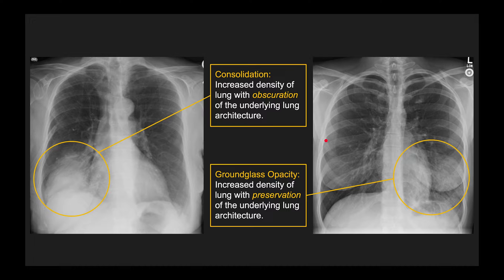Ground glass opacity is a bit different — it's an area of increased density of lung but it's not so dense that it obscures the underlying vessels. This is an area of ground glass opacity. Usually on chest x-rays I use the term consolidation, and if something is ground glass opacity I'll typically use the term airspace disease or airspace opacity rather than ground glass opacity.